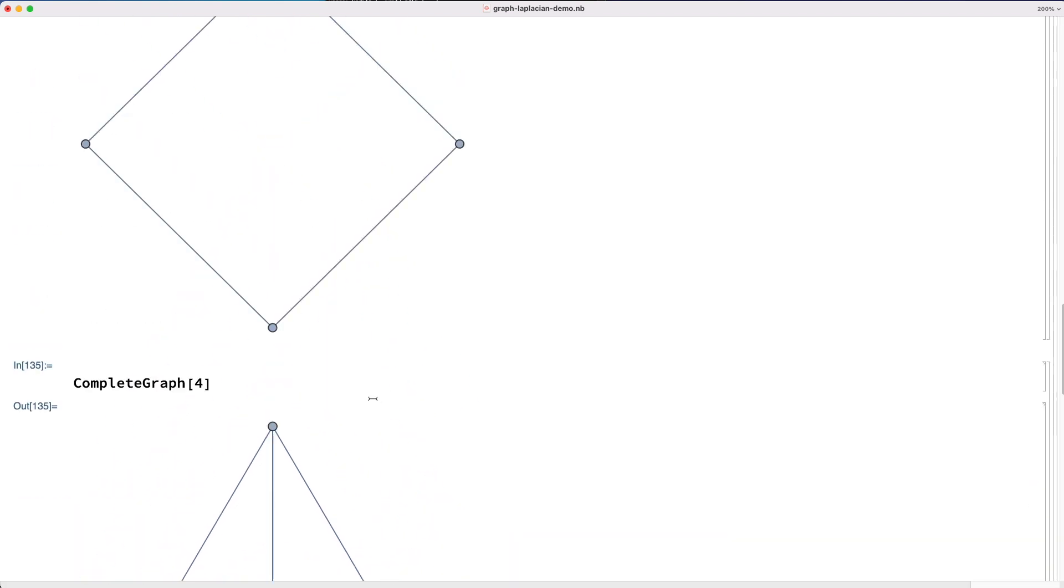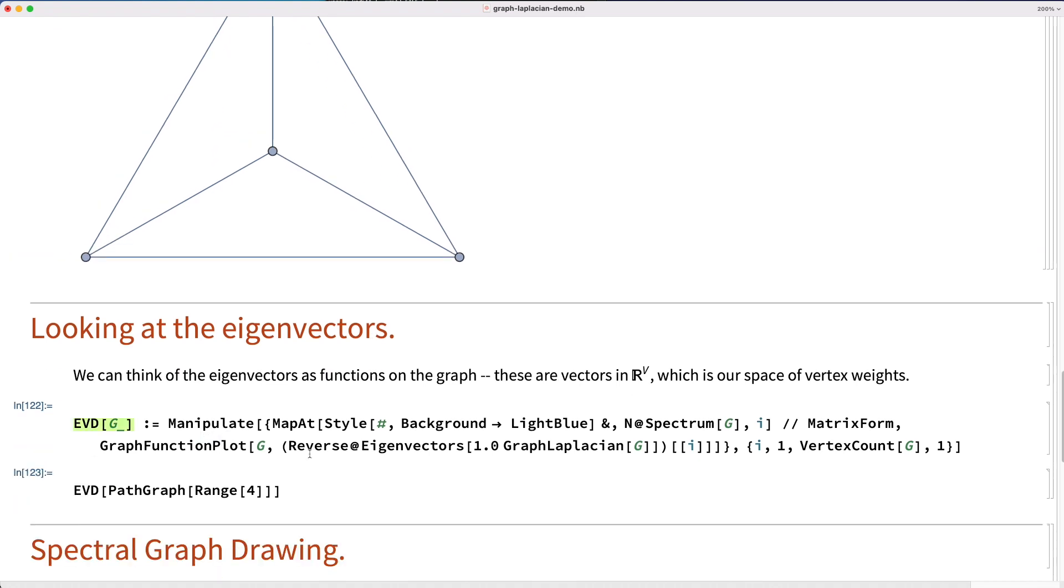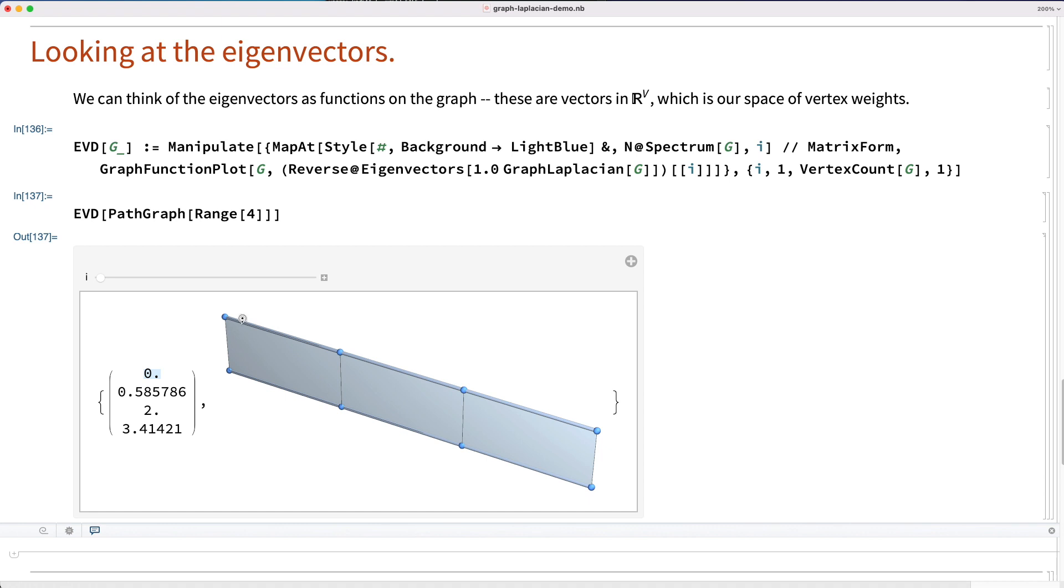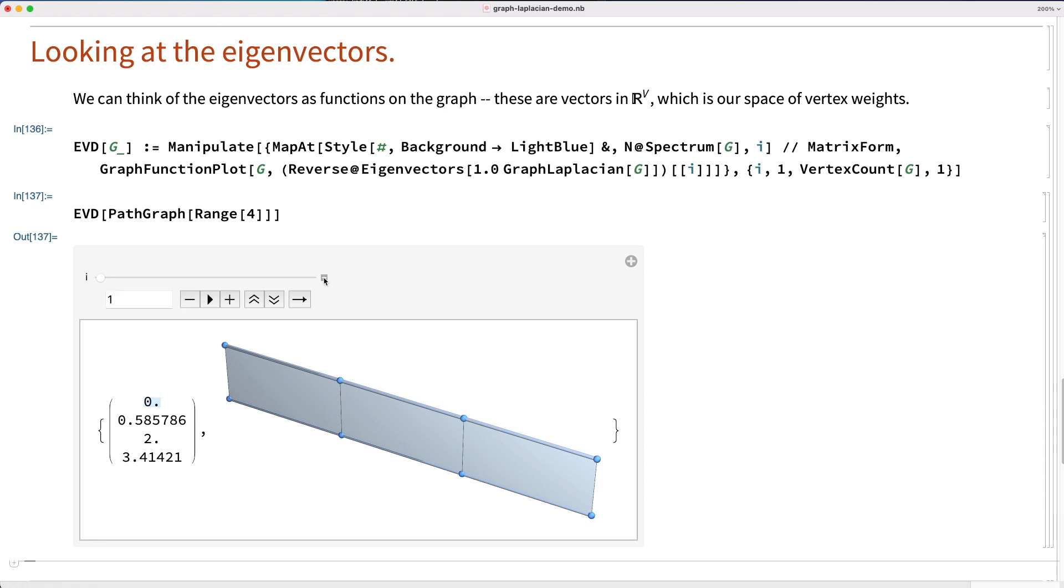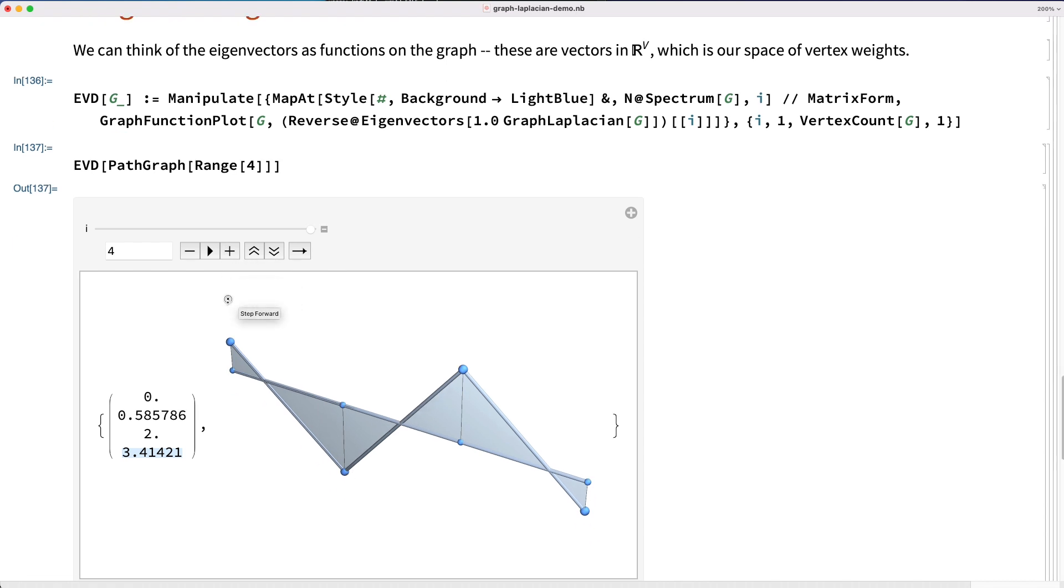Now, we can tell more about the spectrum if we understand what the eigenvectors are, so we're going to do a little demonstration here. Let's look at the various eigenvectors as functions on the graph corresponding to the eigenvalues for our path graph. Here's zero, this is a constant function. The next one looks like this, the next one like that, and the third one is really wiggly. That's all kind of interesting, and we can see the pattern a little better if we make the path graph a lot bigger.